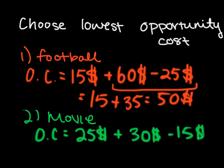where $30 is the amount of benefit you get from watching the football game and $15 is the amount of money you have to spend to watch it. And doing this calculation, we get $25 plus $15 is equal to $40.